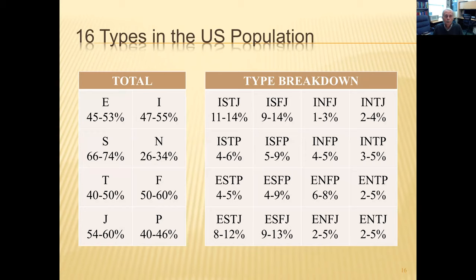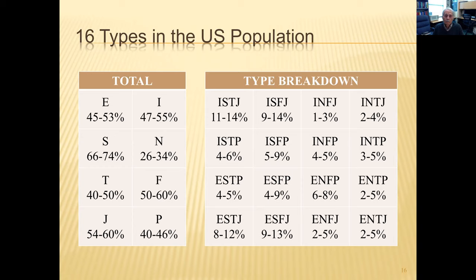The type breakdown in the U.S. population: there are about equal numbers of extroverts and introverts, but about a two-to-one to three-to-one ratio of sensing types to intuitive types. Thinking and feeling is roughly equal. Judging and perceiving is also roughly equal. In the frequency of the 16 types, if every type were equally distributed it would be about 6.7%. But ISTJ, ISFJ, ESTJ, and ESFJ are overrepresented, while INFJ is only one to three percent.